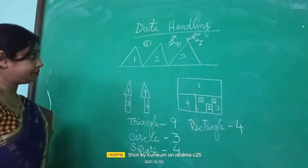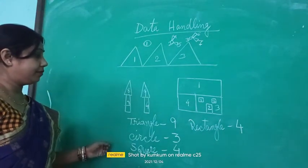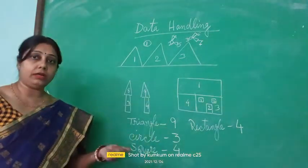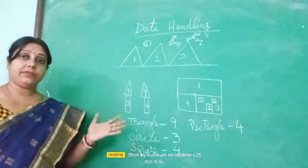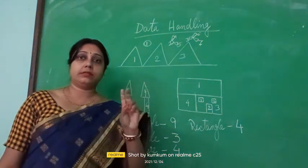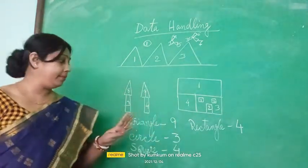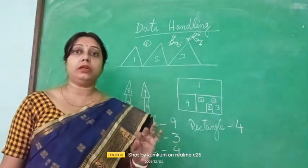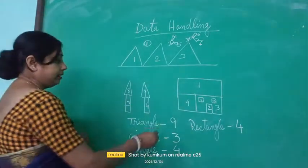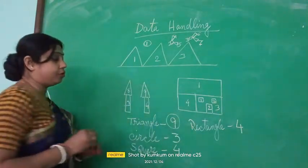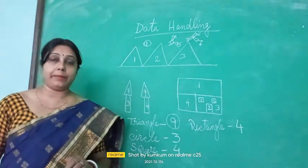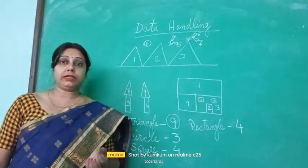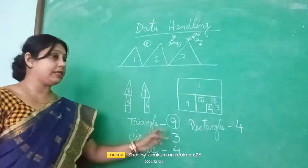Now from the given picture we have got some information — that is the data. What data have we got? Four different types of shapes are used: square, circle, rectangle, and triangle. Among them, which figure is drawn the maximum? Nine is the maximum — so triangles are drawn the most.